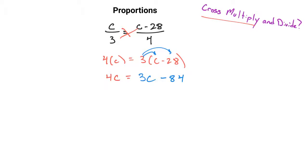And so you can see that the divide part doesn't make much sense in this problem, because you need to solve this with your other algebra and equation-solving techniques, and here we could subtract 3c on both sides, which would just give us 1c is equal to negative 84. And that would be your solution for this particular proportion.